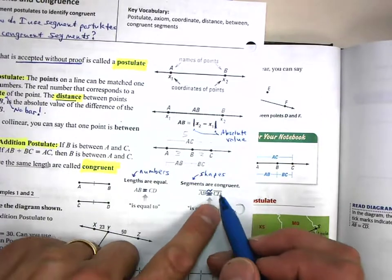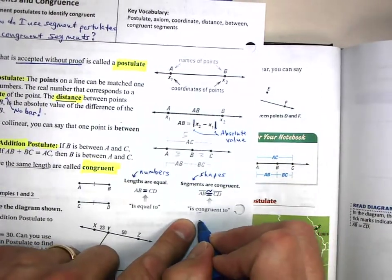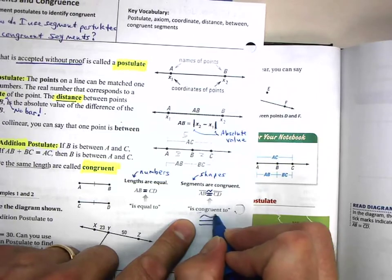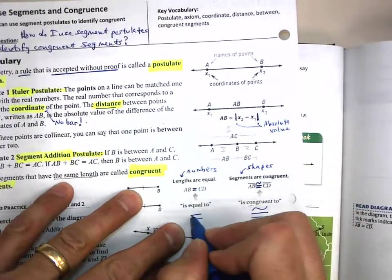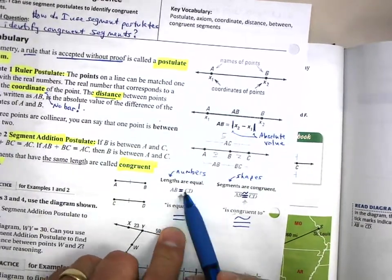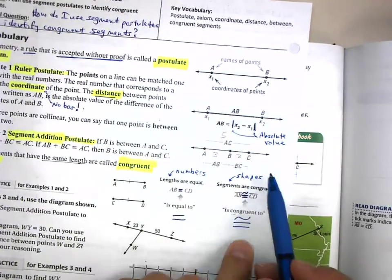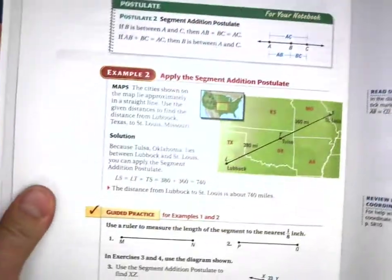Numbers are equal and shapes are congruent. Notice the symbol for congruent—it's an equal sign with a squiggly on top. That means congruent. It's an equal sign with a squiggle, or tilde. Numbers are equal, shapes are congruent. That's important.